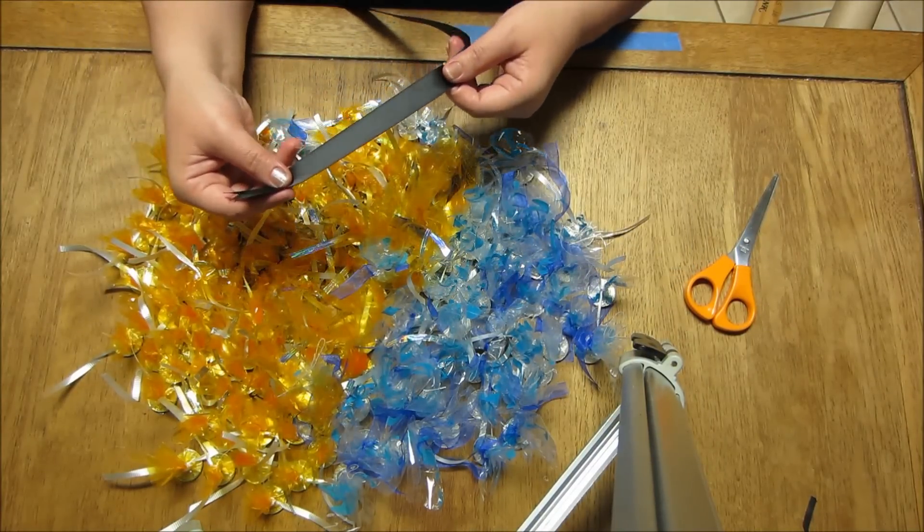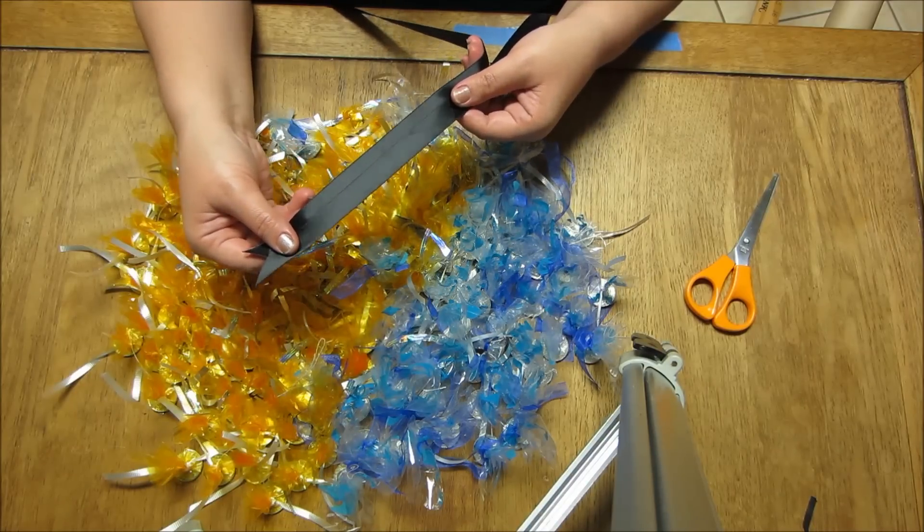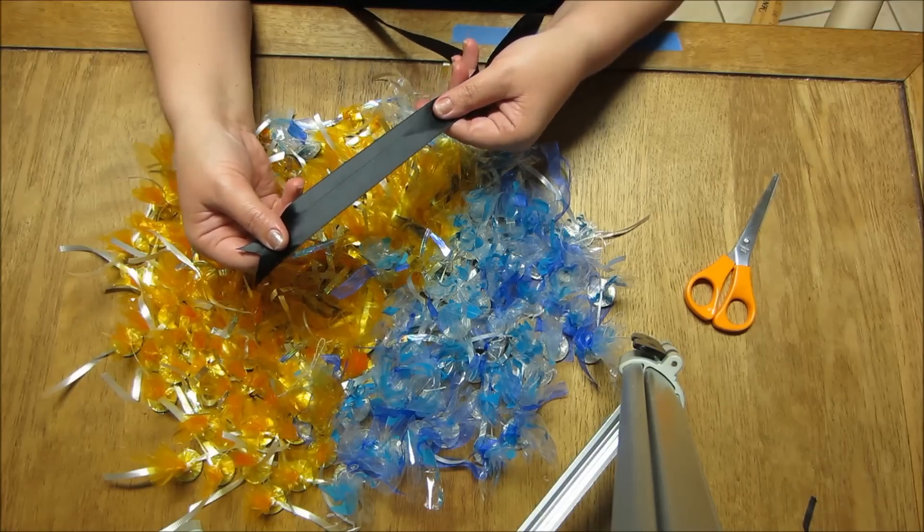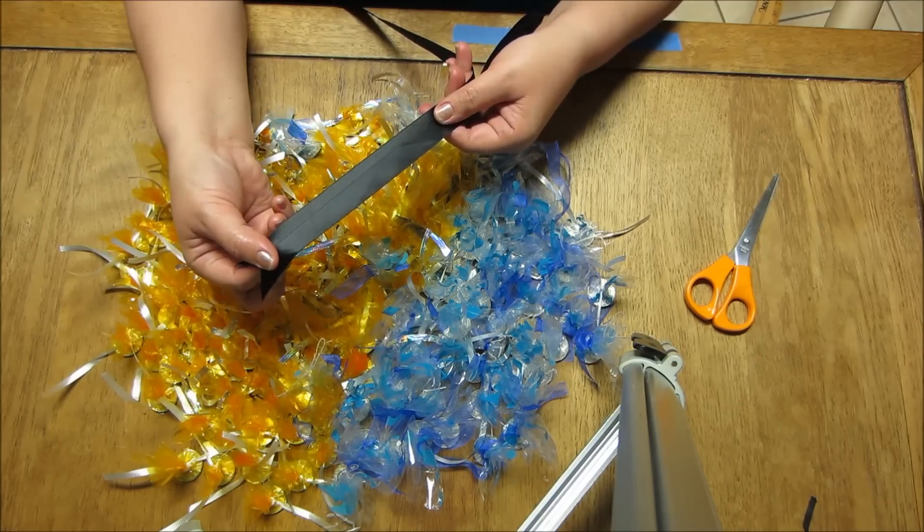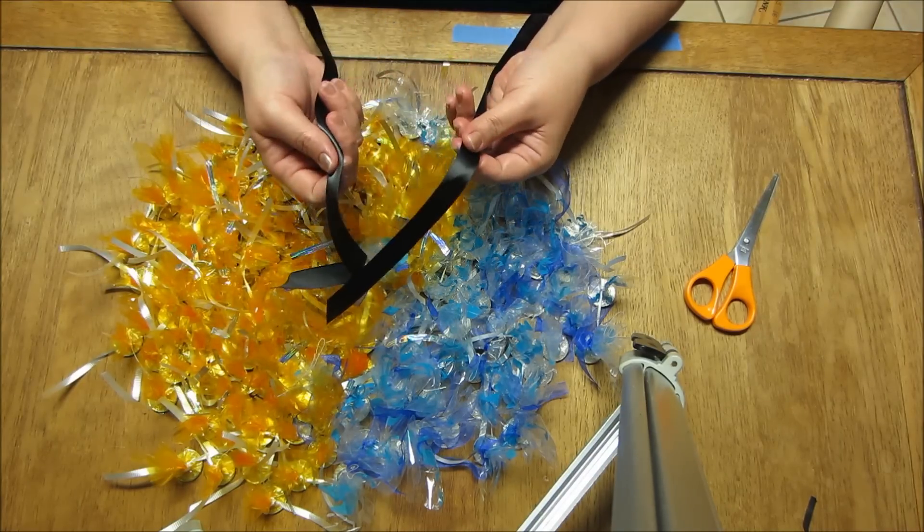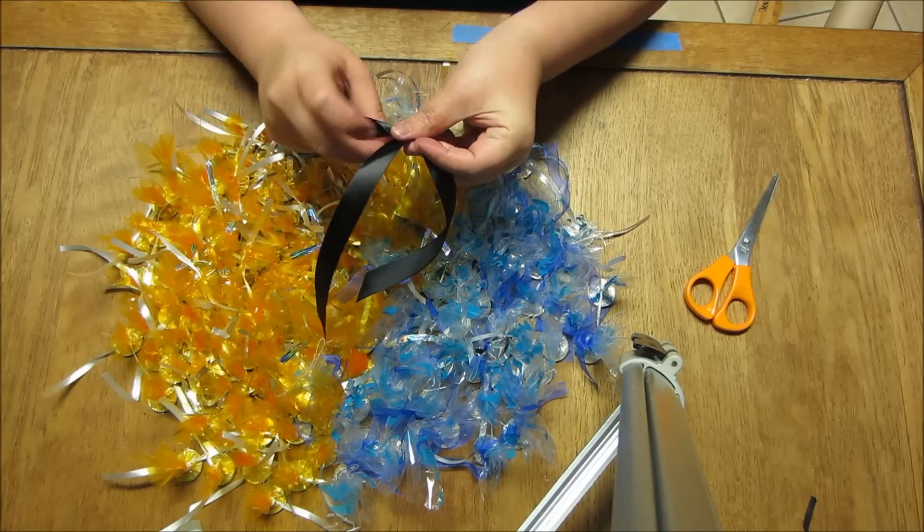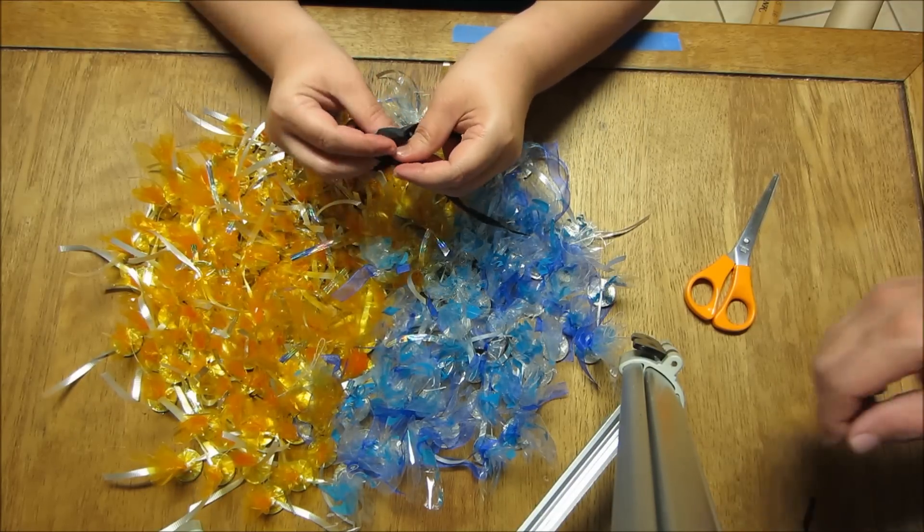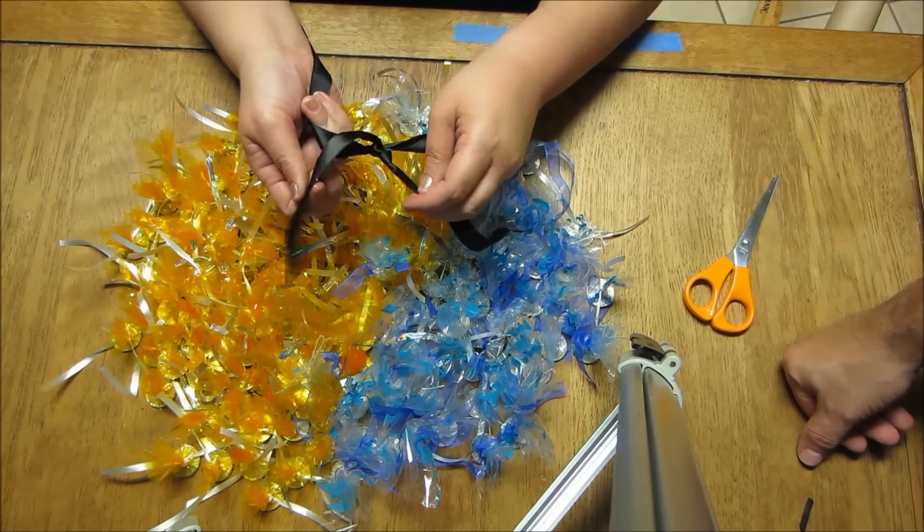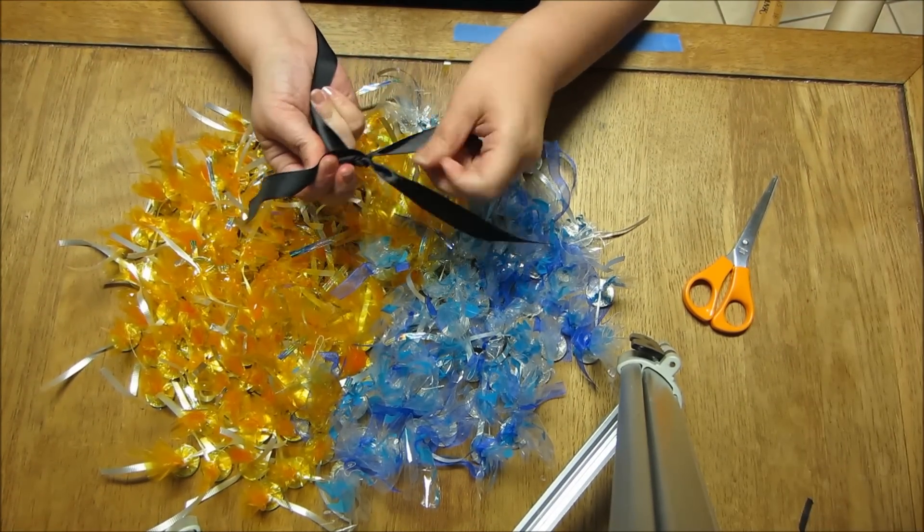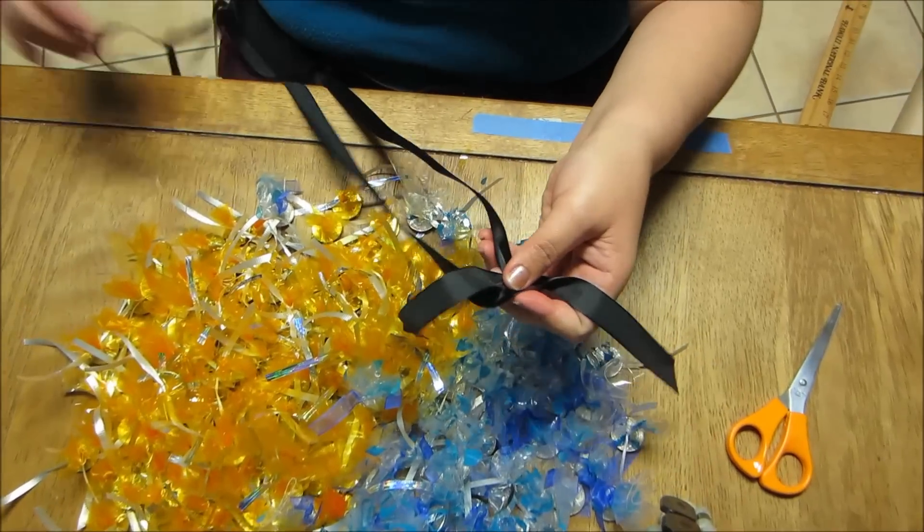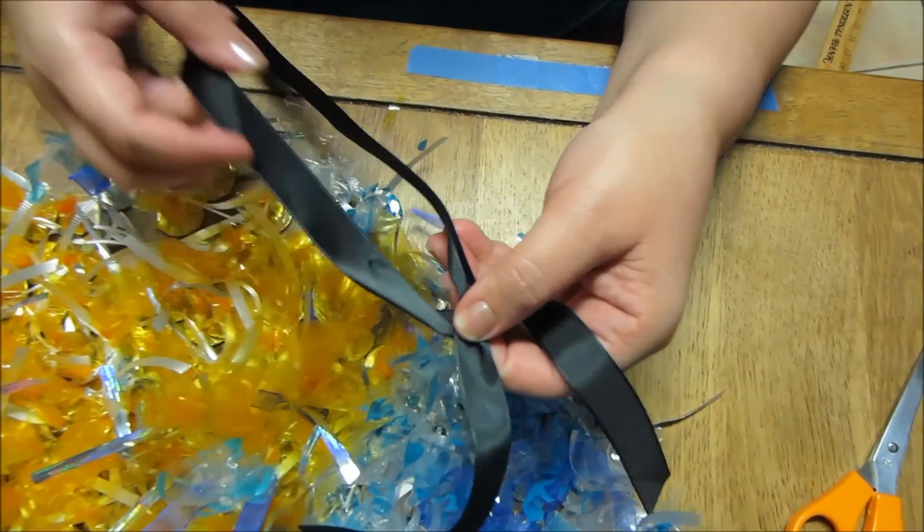Now we're going to put our lei together. I am using black ribbon—this is satin, so I'm putting the shiny side up—and I'm giving a few inches so I can tie the end of the lei. We're going to tie this together to make a knot.